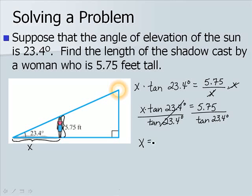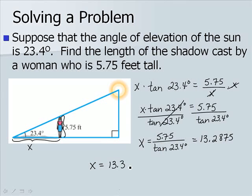We have that X is 5.75 divided by the tangent of our angle, or 13.2875. The length of the shadow, X, is approximately 13.3 feet.